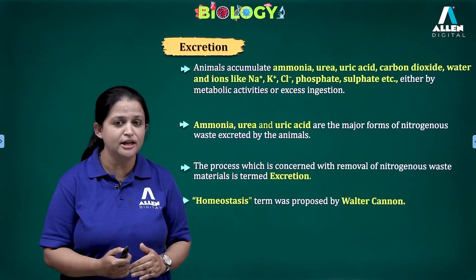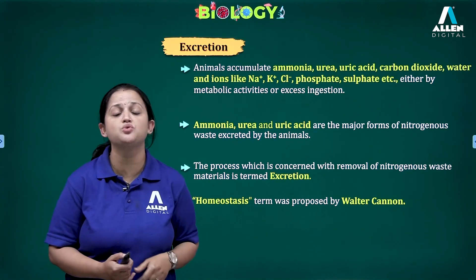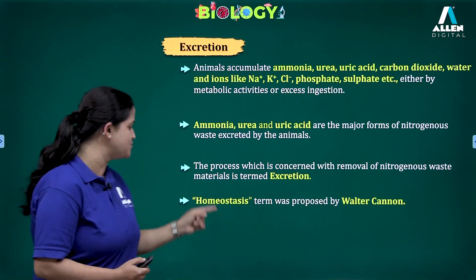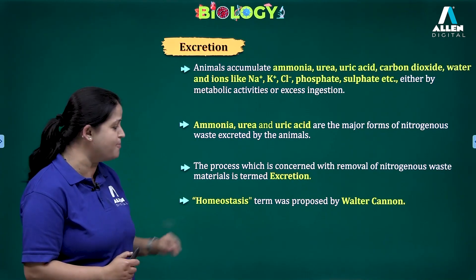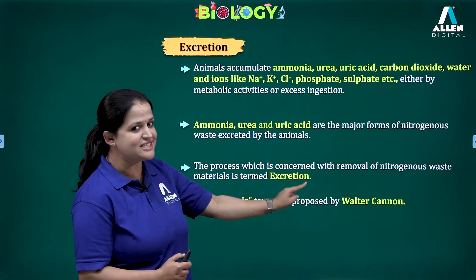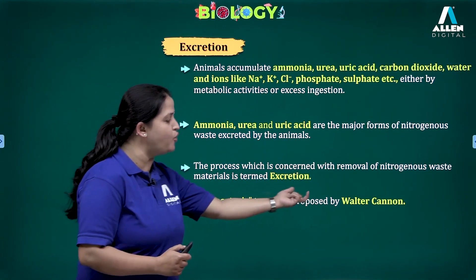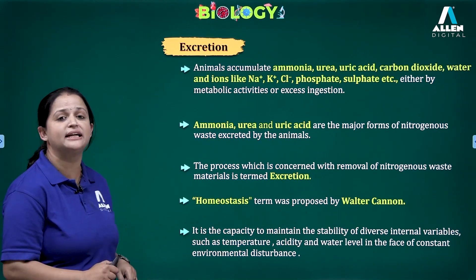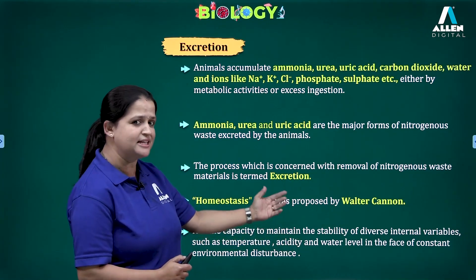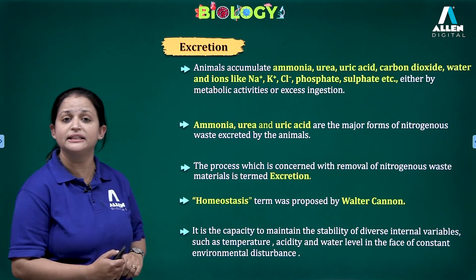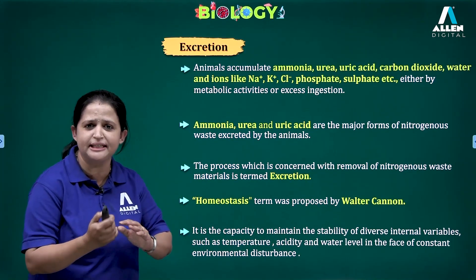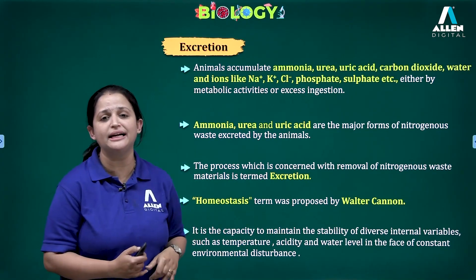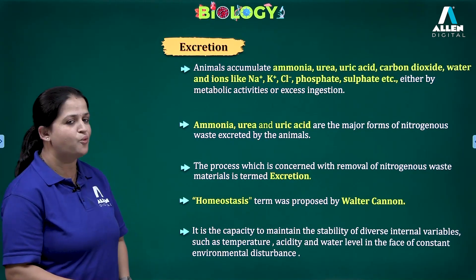In order to maintain our internal environment constant — which means maintaining temperature, water balance, and electrolyte balance — the excretory system is one of the systems that helps maintain this internal environment constant. That process is known as homeostasis. The homeostasis term was proposed by Walter Cannon. Homeostasis means maintaining the internal environment constant — whether it is temperature, pH, or water level in the body.